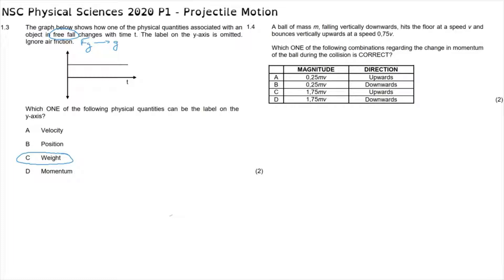What's important to realize is that the momentum has changed direction. The initial momentum is 1v downward, and the final momentum is 0.75v upward. The change in momentum is in the upward direction because the object was initially heading downward and then changed direction upward. Drawing a vector diagram, the change in momentum is 1.75v upward. So the correct answer is option C, where the magnitude of the change is 1.75v and the direction is upwards.